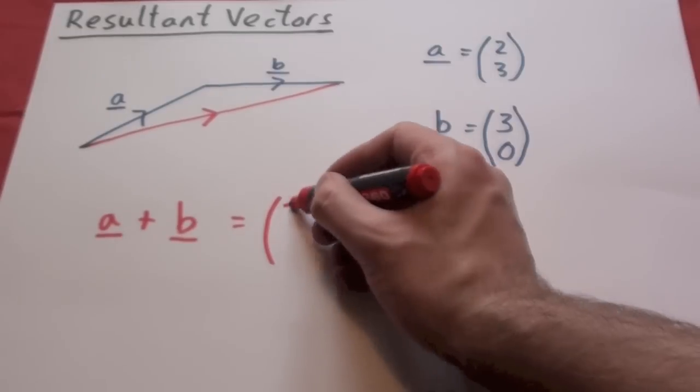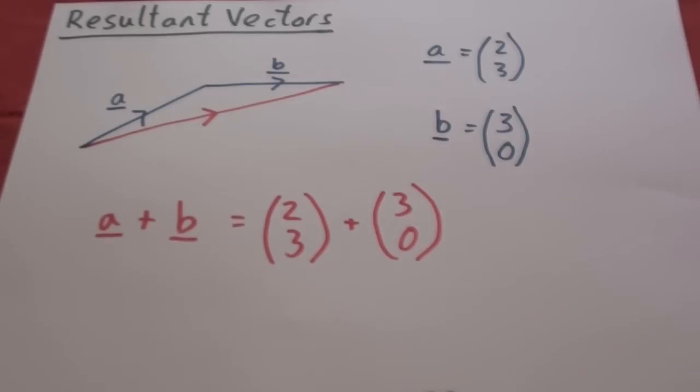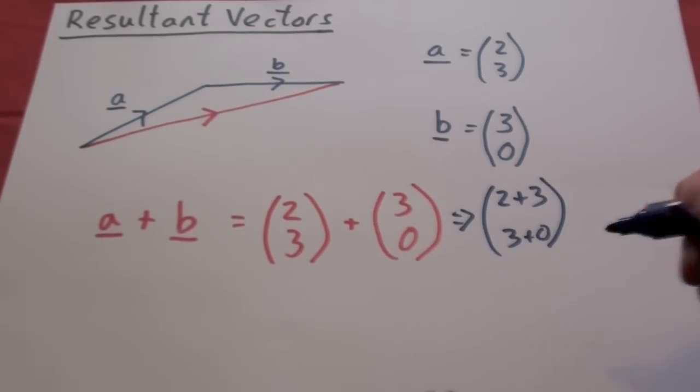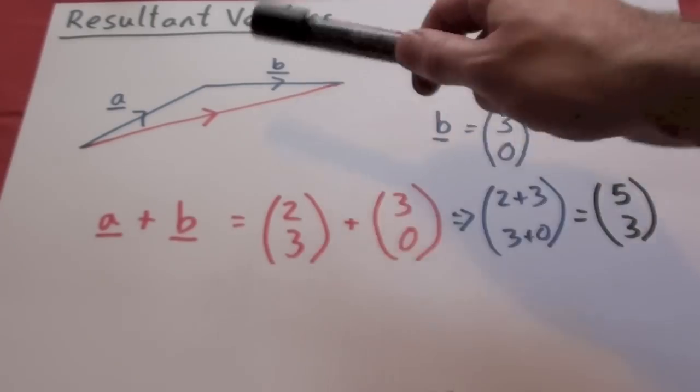So we're adding A and B. We add the column vectors like so and the simple thing to do is you just add the two top numbers and add the two bottom numbers. So our final vector, the vector that goes from the beginning of A to the end of B is 5, 3. 5 right and 3 up.